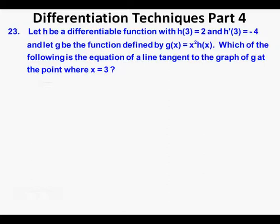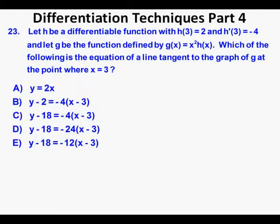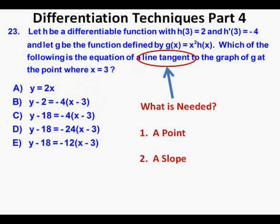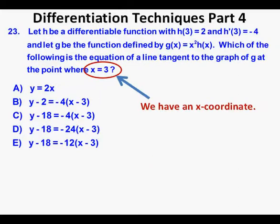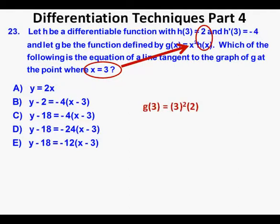Problem 23: Let h be a differentiable function with h(3) = 2 and h'(3) = −4, and let g(x) = x² · h(x). Which of the following is the equation of a line tangent to the graph of g at the point where x = 3? We have five answer choices A through E. For the tangent line equation, we need a point and a slope. We already have x = 3. Plugging in: g(3) = 3² · h(3) = 9 · 2 = 18. So our point is (3, 18).